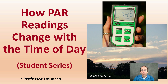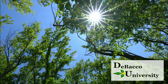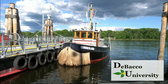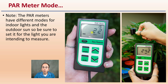On this DeBacco University student series video, we're going to see how PAR readings change with the time of day by taking samplings at different times and seeing how quickly sunlight can reduce PAR over time. Before getting into the video, note that PAR meters have different modes — make sure the PAR meter is set to the indoor light setting for electric lighting, or set to Sun if you're outdoors, so you're getting accurate readings.